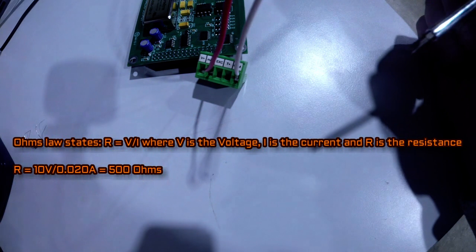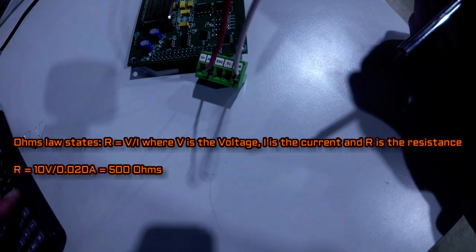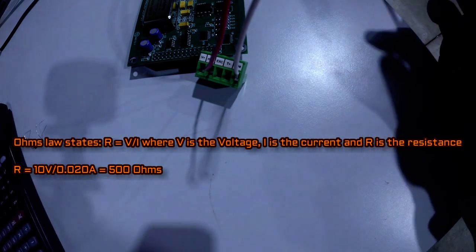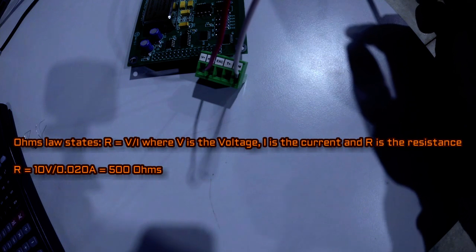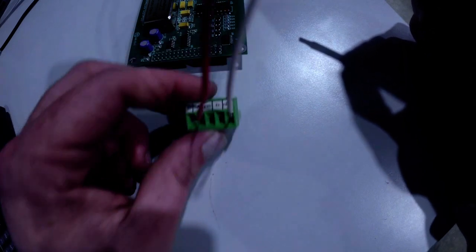Knowing that we have 4 to 20 milliamps or 0 to 20 milliamps, if we take 10 volts and divide that by 0.020, that would be 0.02 amps or 20 milliamps. So if we take our voltage, 10 volts would be our max and our 0 to 10 volts, and divide that by 20 milliamps, we would get 500.